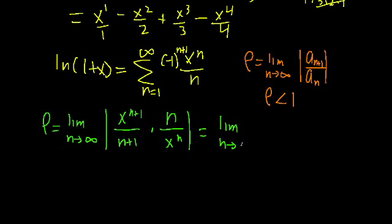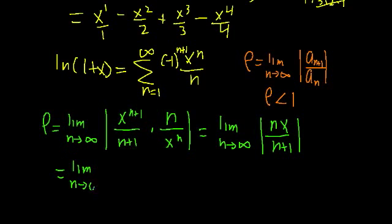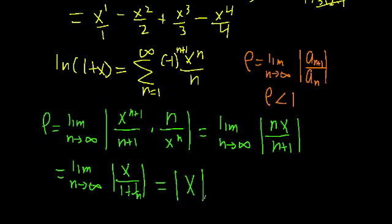Let's simplify this up. We're going to get the limit as n approaches infinity of n times x over n plus 1. Now let's divide the numerator and denominator by n so we can take the limit more easily. We get that rho is equal to the limit as n approaches infinity of x over 1 plus 1 over n. When n goes to infinity, the 1 over n term goes to 0, so our entire denominator is just 1, giving us rho is equal to the absolute value of x.